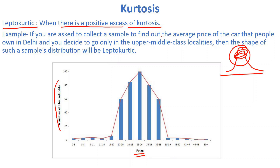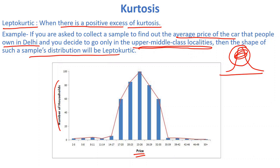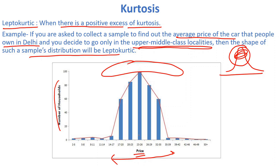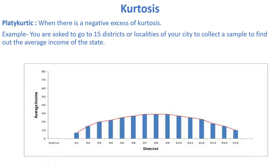For example, if you are asked to collect a sample to find out the average price of cars that people own in Delhi, and you decide to go only to upper-class and middle-class localities, the shape of the sample distribution will be leptokurtic. The data ranges from 14 to 20 lakhs for upper-middle-class people, and most people buy cars in the 25 to 30 lakhs range. This type of distribution with a positive excess of kurtosis is called leptokurtic.